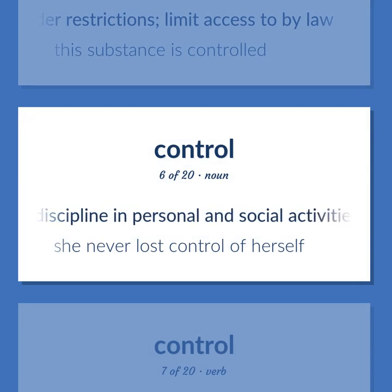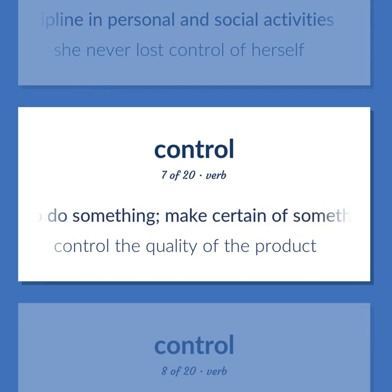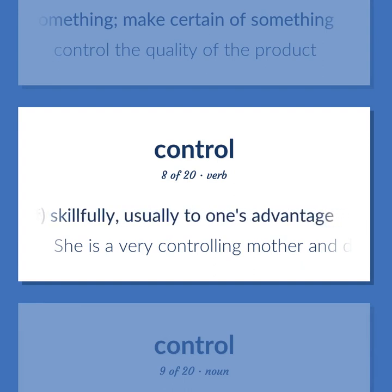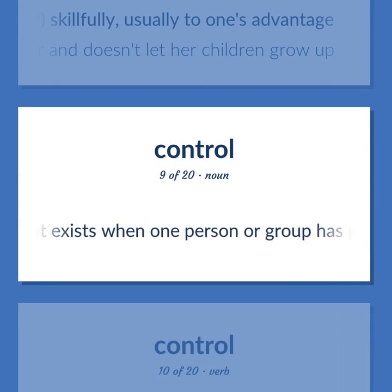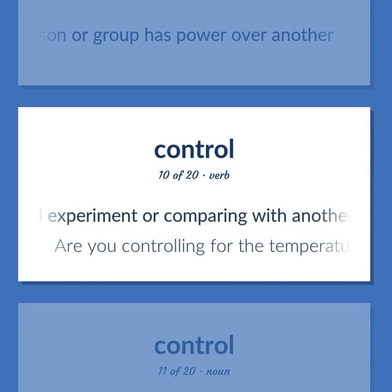Discipline in personal and social activities — she never lost control of herself. Be careful or certain to do something; make certain of something — control the quality of the product. Maintain influence over others or oneself skillfully, usually to one's advantage. She is a very controlling mother and doesn't let her children grow up. The state that exists when one person or group has power over another. Check or regulate a scientific experiment by conducting a parallel experiment or comparing with another standard — are you controlling for the temperature?